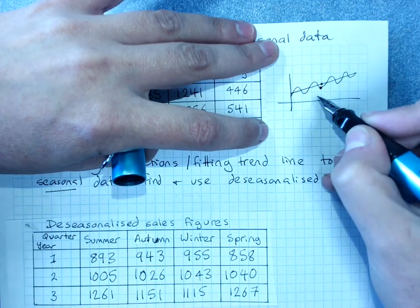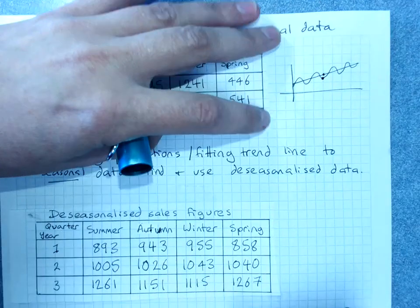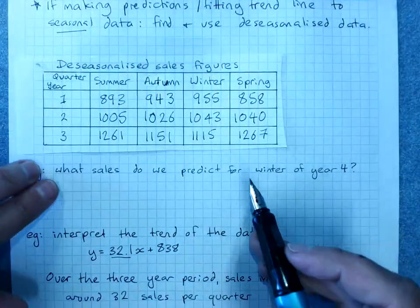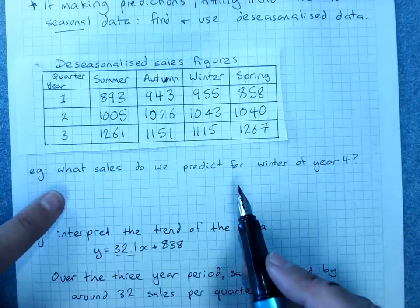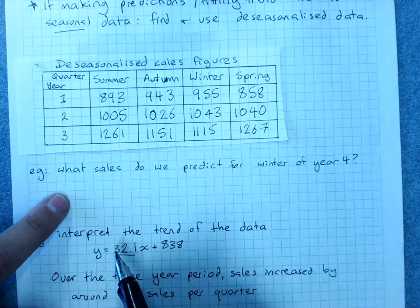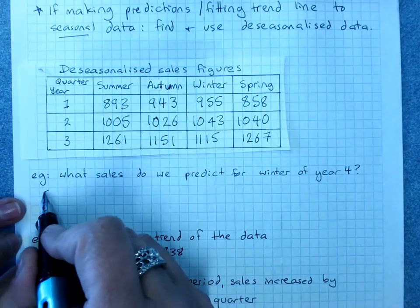We would have to re-seasonalize our data. So our steps are, we make a de-seasonalized data prediction based on the line, and then we re-seasonalize it.